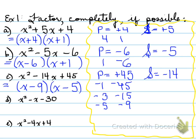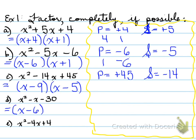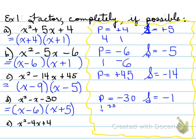x squared minus x minus 30. What two numbers multiply to give us negative 30 and add to give us negative 1? It will be negative 6 and positive 5. And if you need the work, here are all the combinations — and that's why we have that.